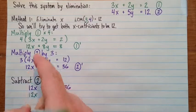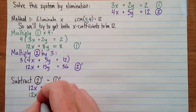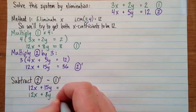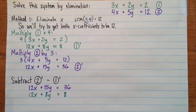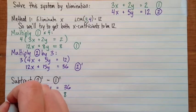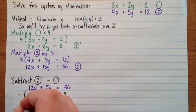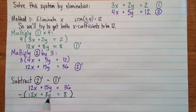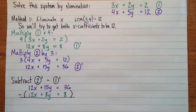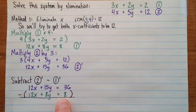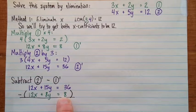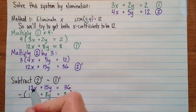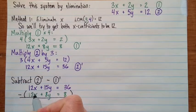We're subtracting 12x plus 8y equals 8. Okay, now as we subtract this, we'll put a big negative sign. Make sure you put the whole thing in brackets, because it's going to be important to remember to subtract each one of these. For example, this 8 is really far away. It's really easy to forget that you're subtracting that and to add by accident.